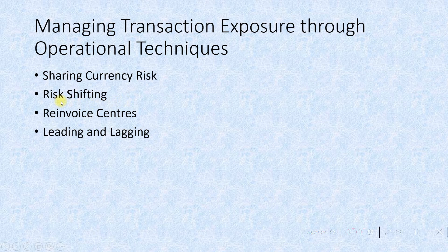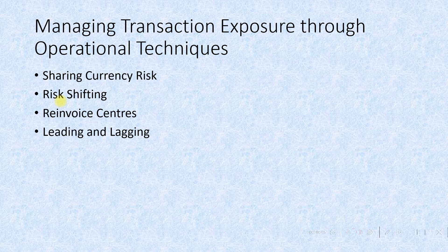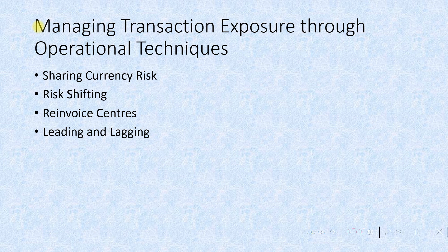The next method is risk shifting. The only way to eliminate transaction exposure is not to have an exposure at all. This is done by invoicing, to the extent possible, all transactions in home currency, so a firm avoids transaction exposure altogether. However, dealing with foreign currency sometimes becomes inevitable; in such cases, a firm bears all currency risk at the lowest possible cost.